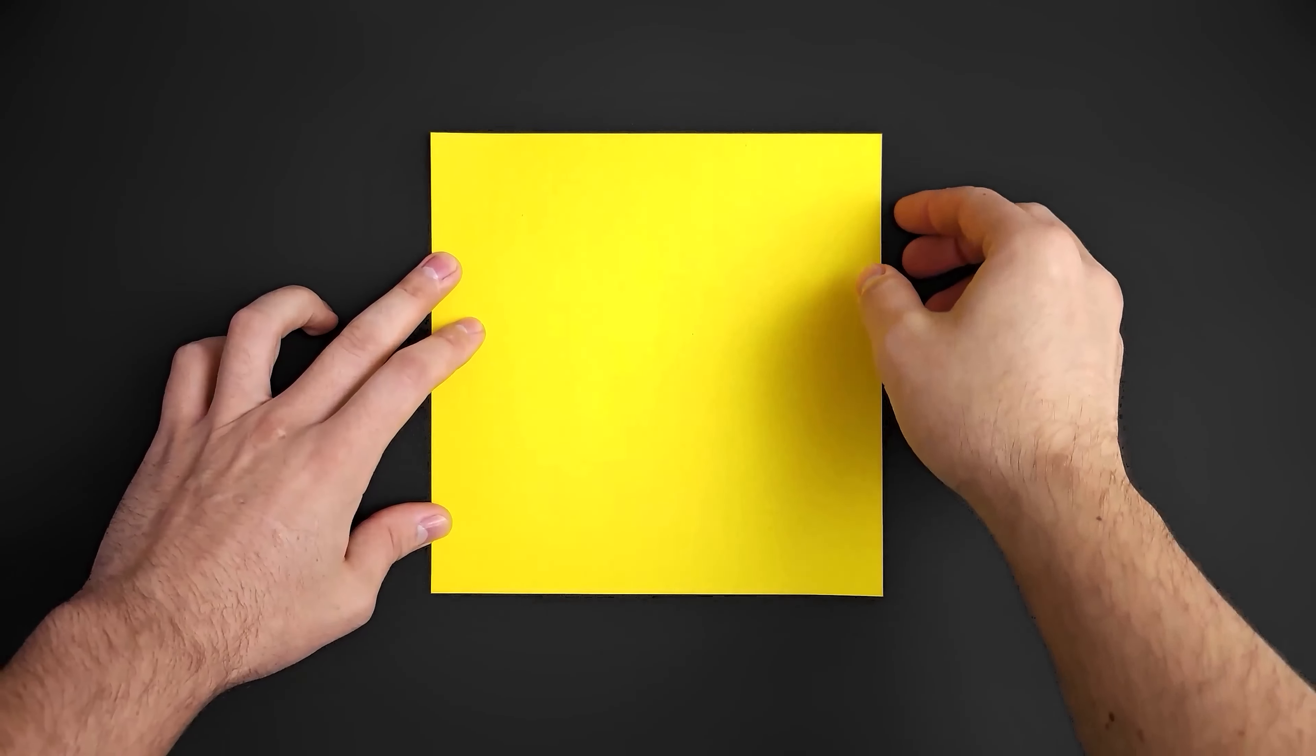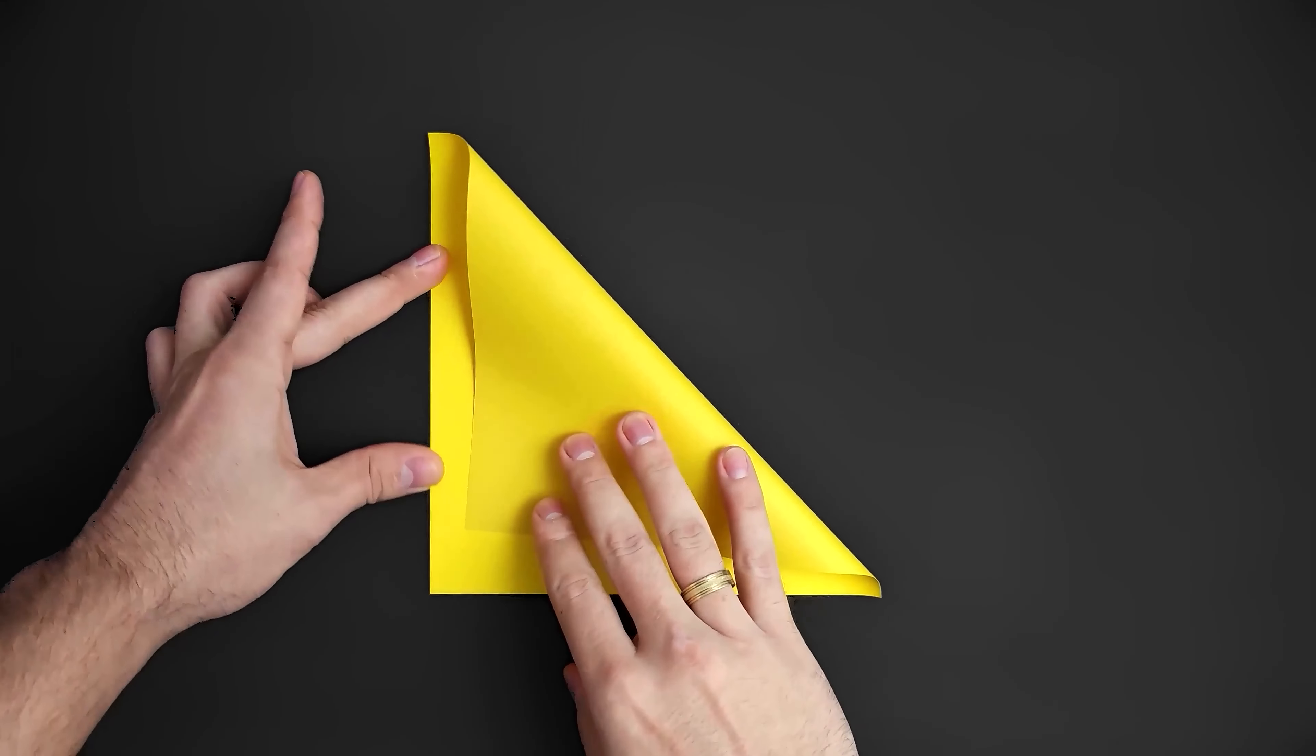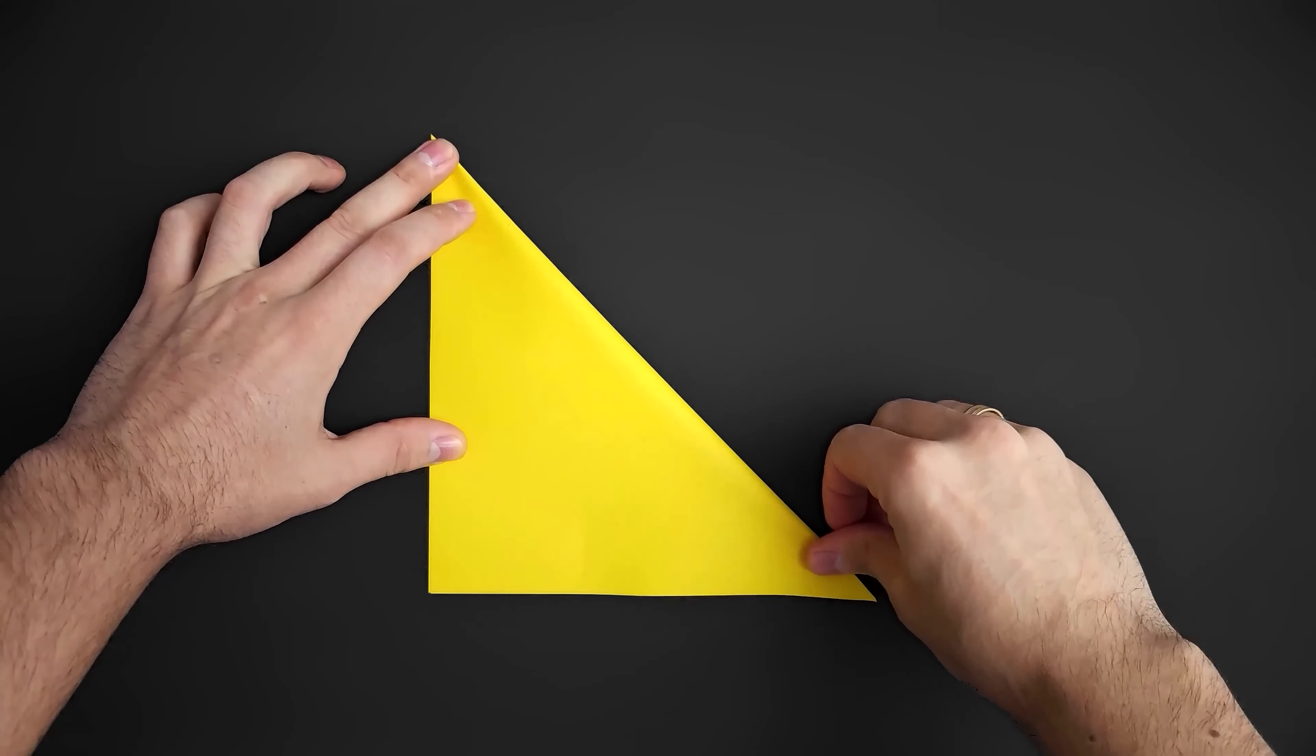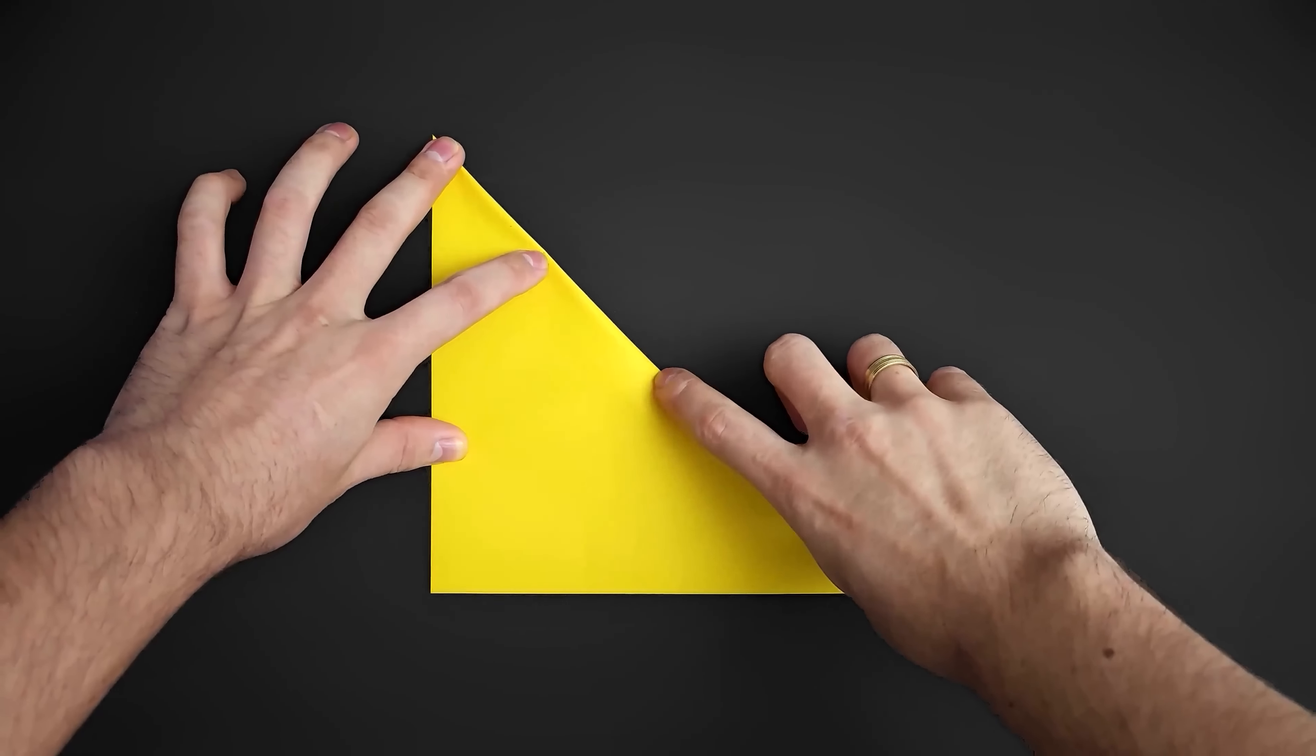Our first step is to fold it in half, diagonally. Just bring one corner to the opposite corner and press the middle.